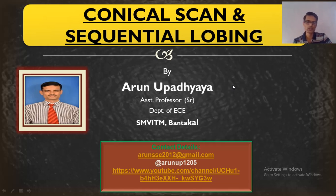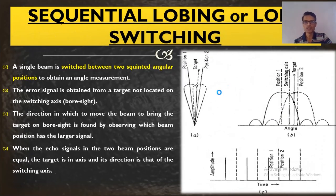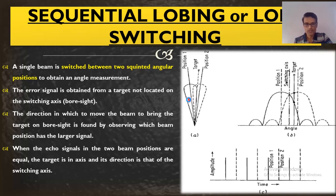We will understand what sequential lobing and conical scanning are. The first method is sequential lobing, also called lobe switching or sequential switching. Looking at the radiation pattern, we have two squinted beams in two different positions, and these two radiation beams are generated using a single feed — the same feed is rotated in different directions.